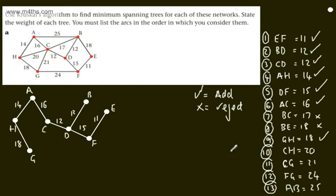Now, H to C, or CH, which is 20, is going to create a cycle. Therefore, I reject it. As you can see, the later on in the list we go, quite clearly, the more cycles are possible. So the next one, C to G, no. That will create a cycle. If we consider F to G, no. That's going to create a cycle. And then finally, A to B, no.